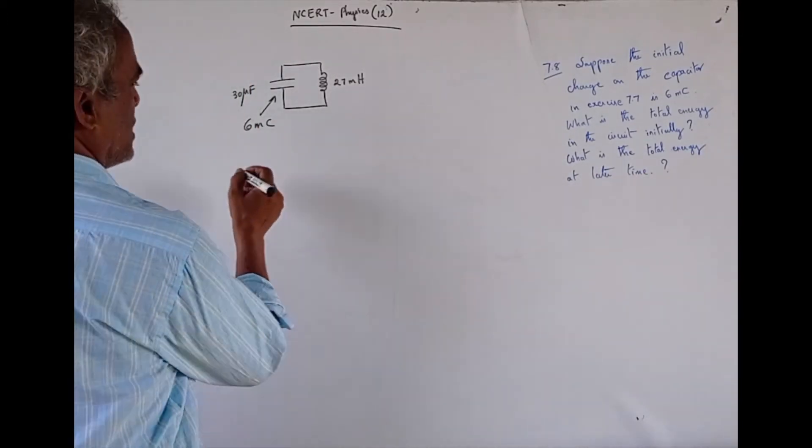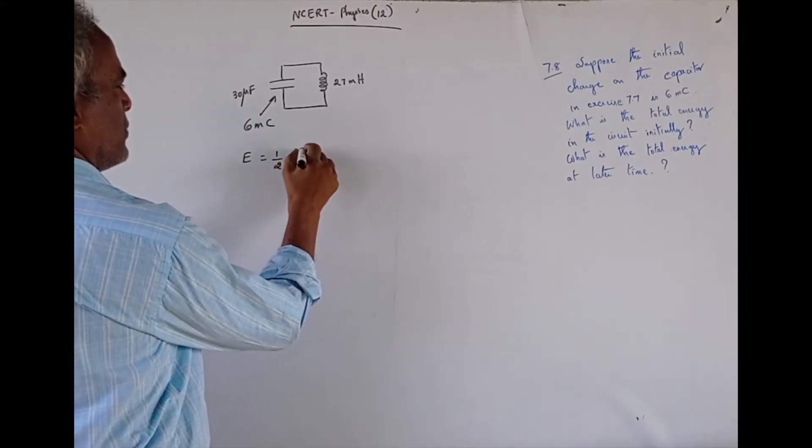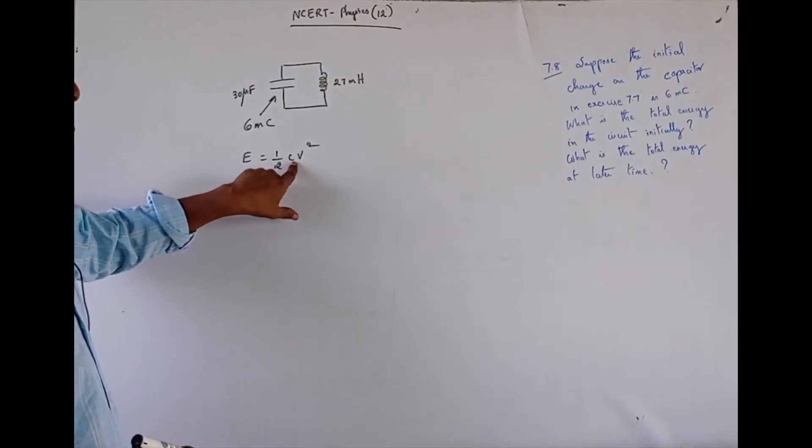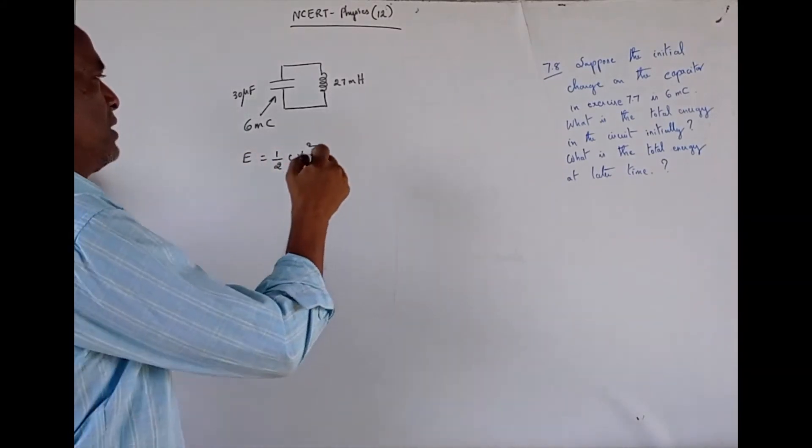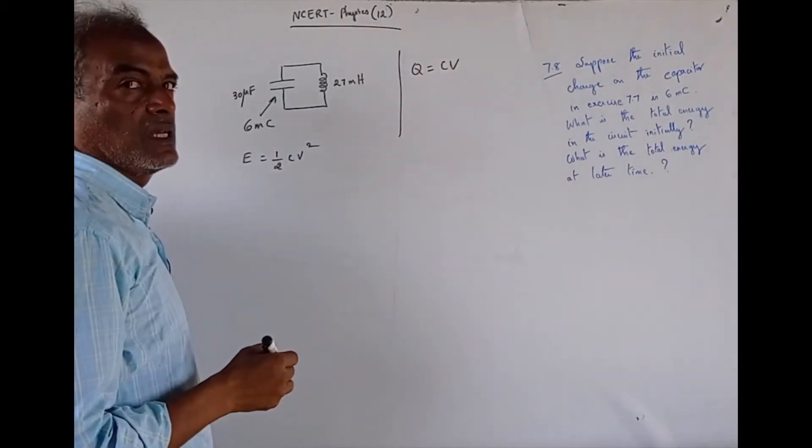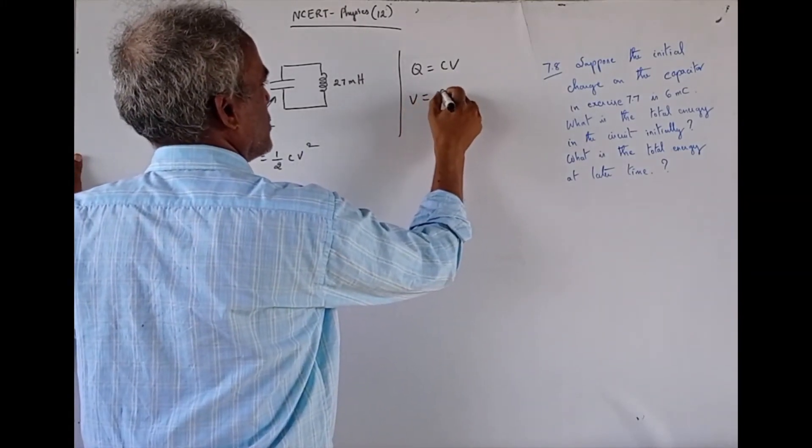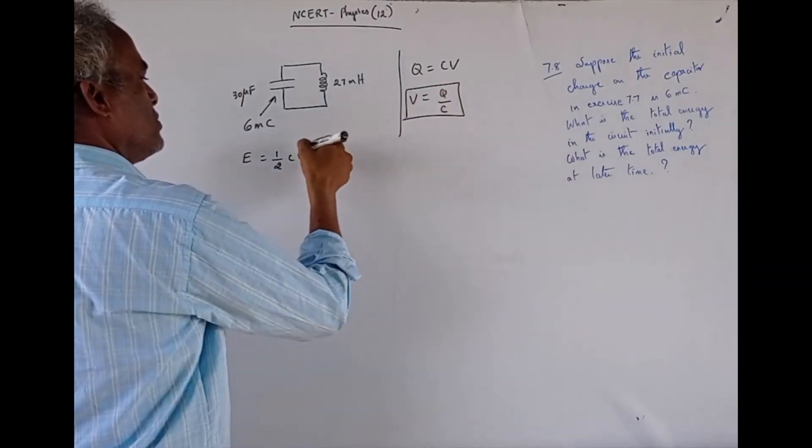So, energy, energy in a capacitor, energy stored in a capacitor is half CV squared. Now, we know the value for C, but we do not know the value for V. So, to find out V, we have a relation Q is equal to CV. Therefore, what is V, V is equal to Q by C.